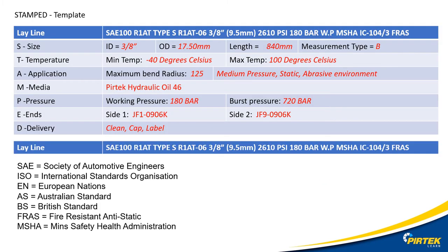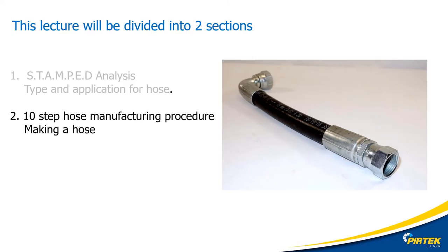Let's complete our stamp template. Yes, we're going to clean, cap, and label the hose. Pressure testing is not required by our particular customer. Be aware there is other information available on the lay line — for example, particular standards that the hose is manufactured to. Does it have a fire rating or anti-static rating? Does it have a mine safety and health administration approval? We've completed our stamped analysis. Now let's have a look at the Pertec 10-step hose manufacturing procedure — in other words, making the hose.